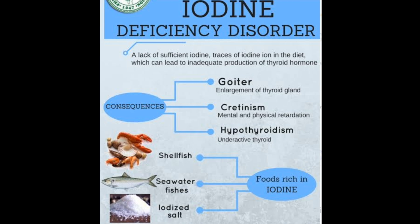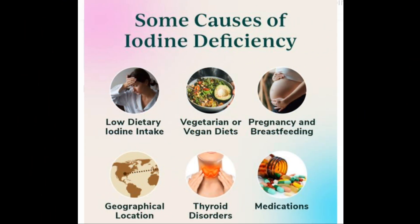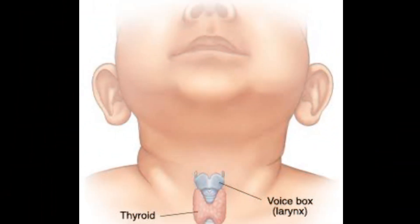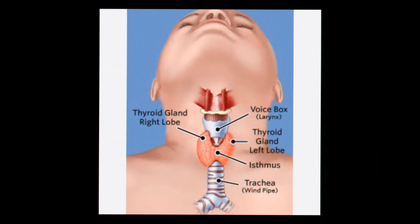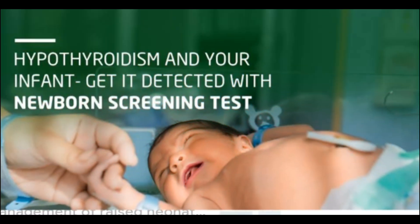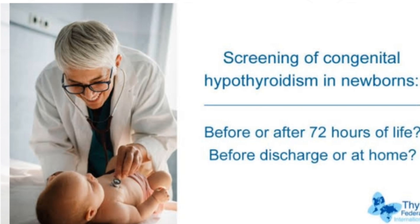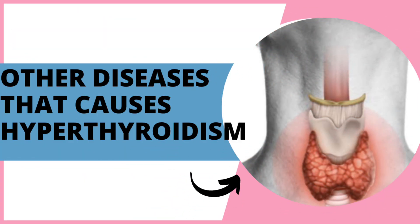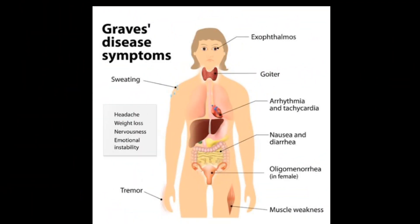Iodine deficiency is another cause — iodine is used by the thyroid to produce hormones, and deficiency affects several million people worldwide. Additionally, a non-functioning thyroid gland at birth affects about one in four thousand newborns. If left untreated, the child could have both physical and mental issues in the future; all newborns are given a screening blood test in the hospital to check thyroid function.